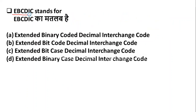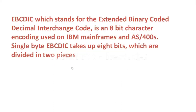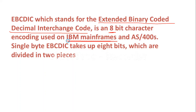EBCDIC stands for — Option A: Extended Binary Code A Decimal Interchange Code. Option B: Extended Bit Code Decimal Interchange Code. Option C: Extended Bit Case Decimal Interchange Code. Option D: Extended Binary Case Decimal Interchange Code. The correct answer is Option D — EBCDIC stands for Extended Binary Coded Decimal Interchange Code. It is an 8-bit character encoding used on IBM mainframe computers.